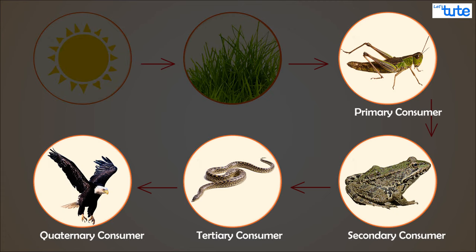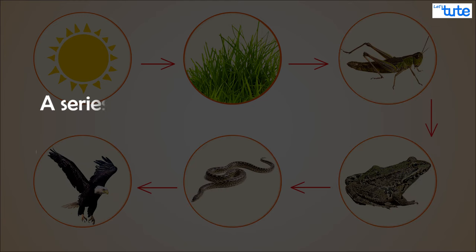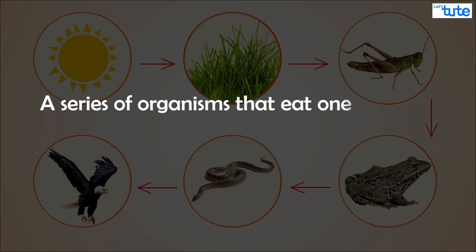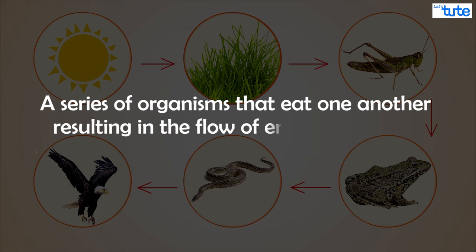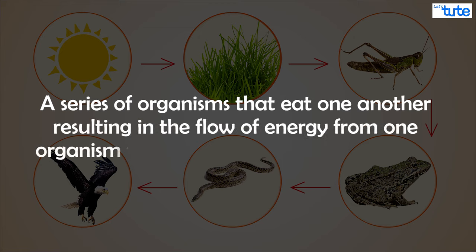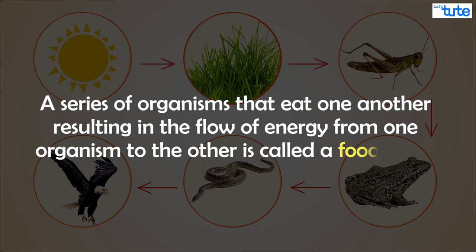All other organisms which feed on each other are consumers. Thus, a series of organisms where each feeds on the other, resulting in the flow of energy from one organism to the other, is called a food chain. Many such food chains exist in the ecosystem.